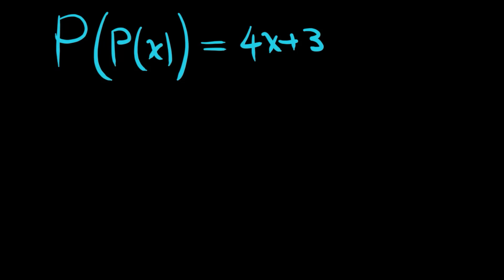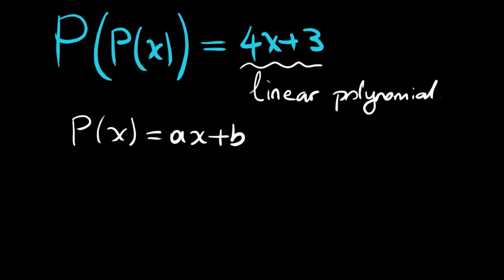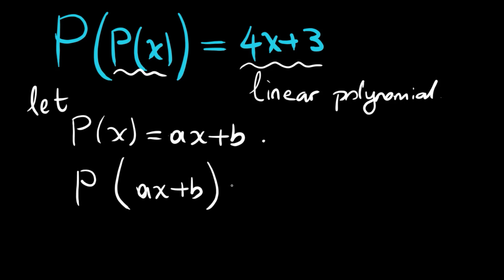Since we know P is a polynomial and the right-hand side is a polynomial of degree 1 — that is, a linear polynomial — we will name P(X) as AX + B, a form of linear polynomials. Let P(X) = AX + B. Then for the inner part we have P(AX + B) = 4X + 3.